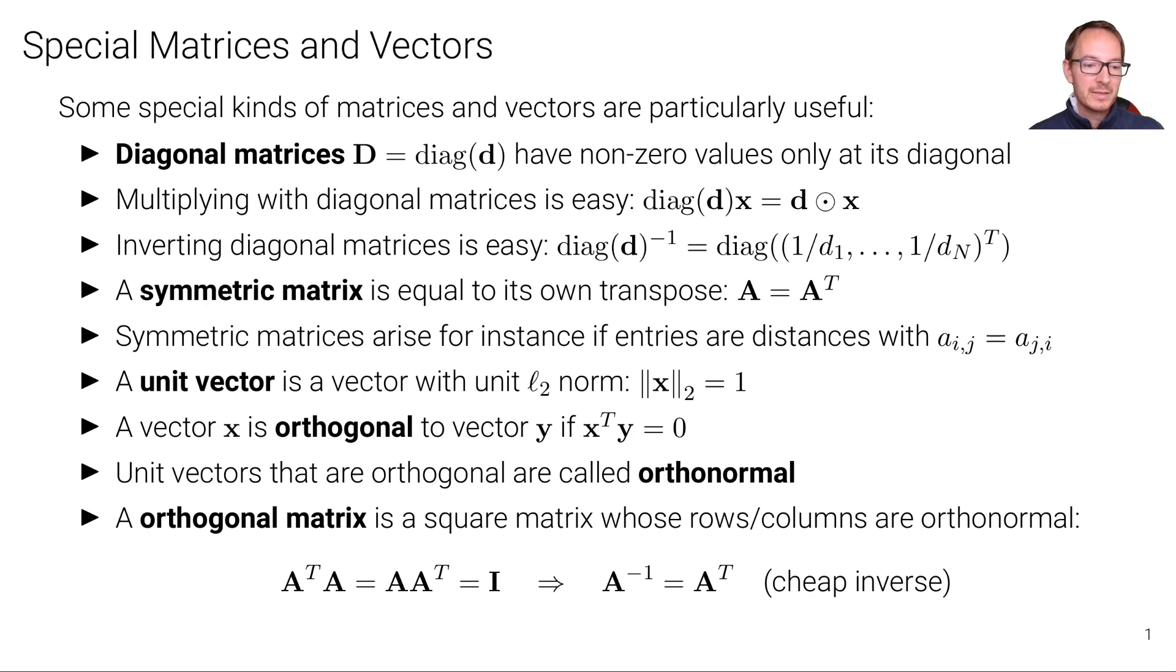And finally, an orthogonal matrix is a square matrix whose rows and columns are orthonormal. Sometimes this matrix is also called an orthonormal matrix. You can say either orthogonal matrix or orthonormal matrix.